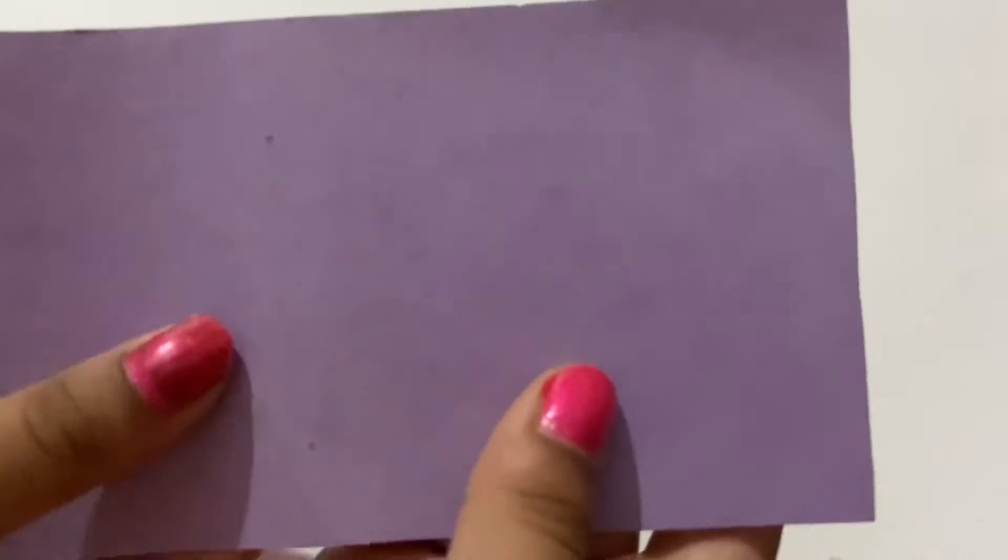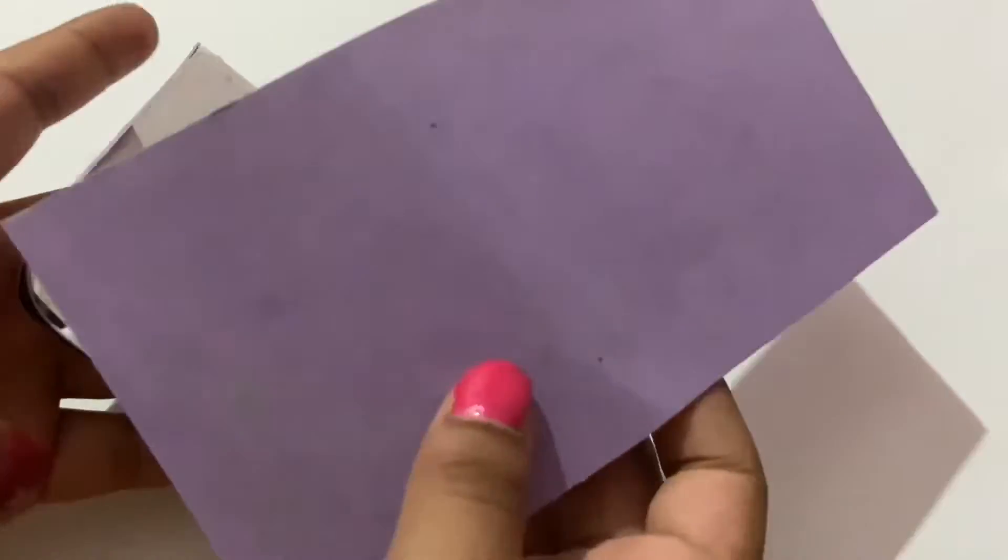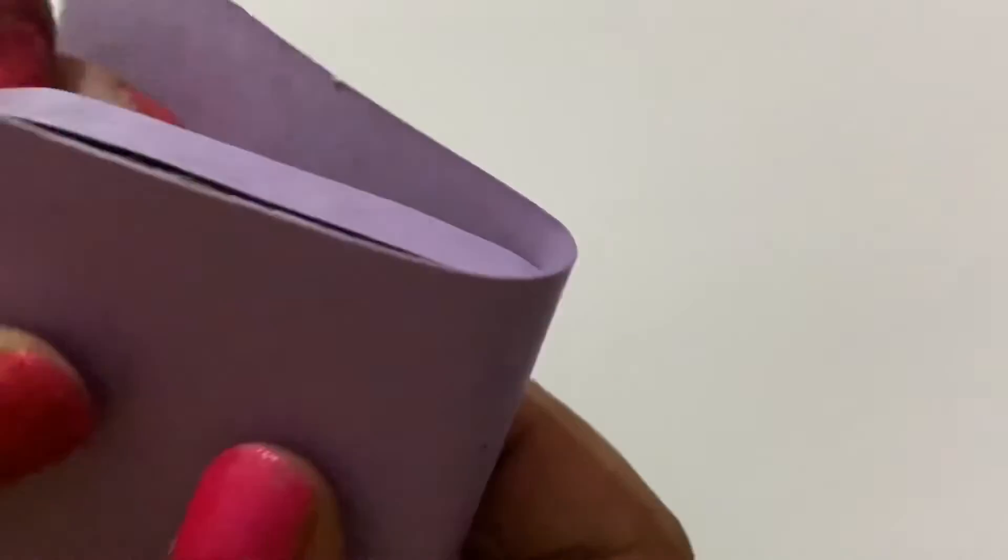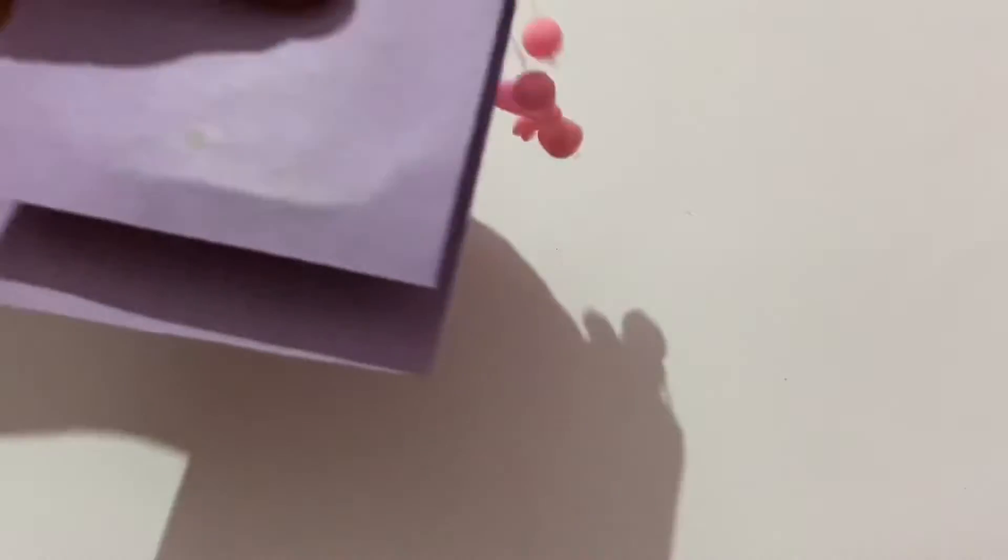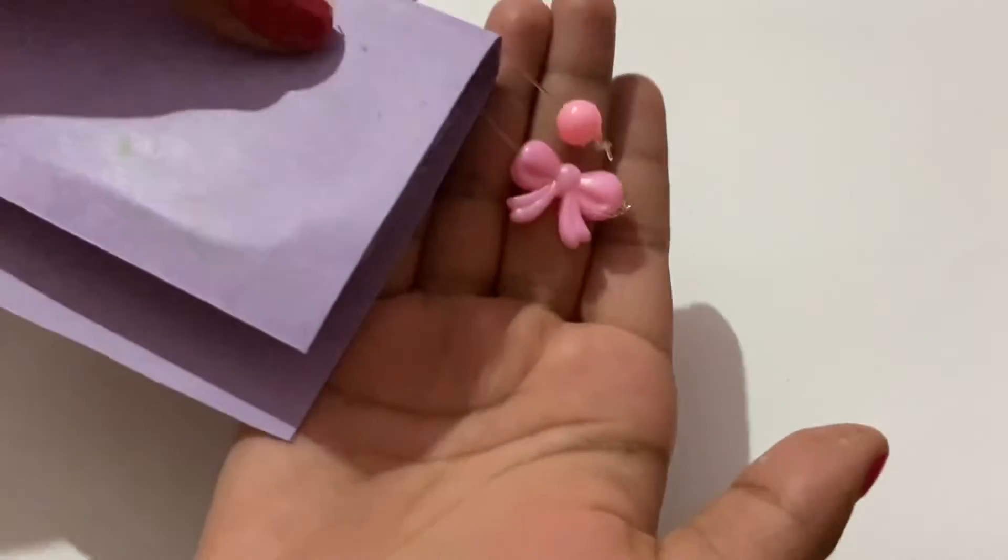I'm going to get a piece of paper of the color we want, like that. You just want to crease it along all the folds just so it's easier, and then you want to glue it on like that.